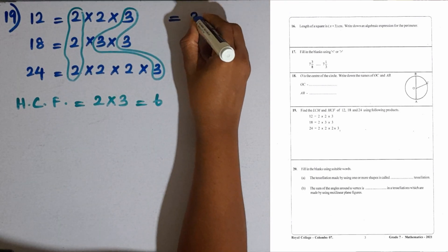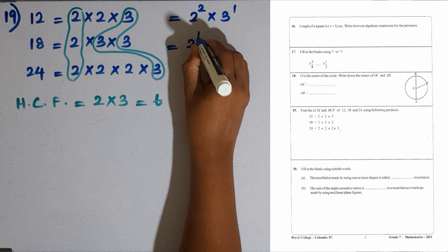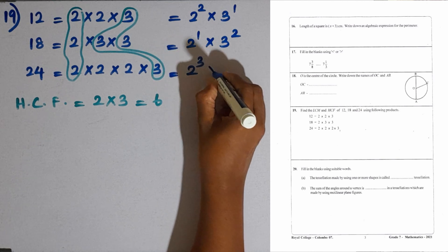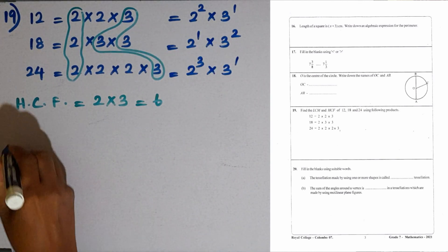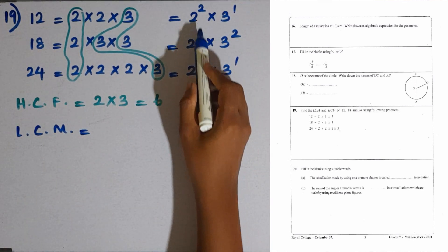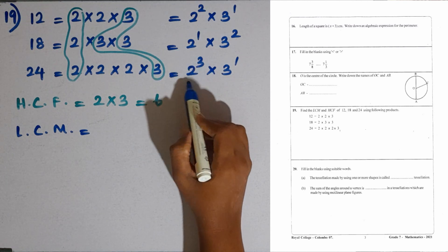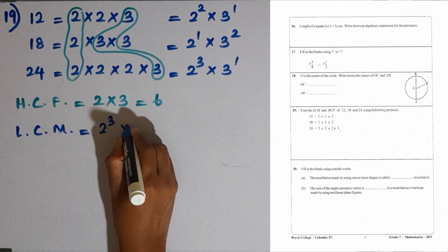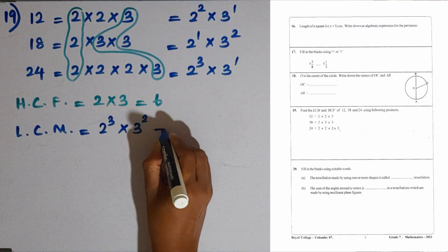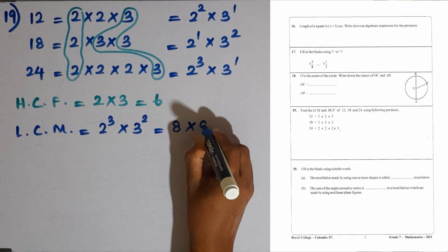Then how to take the least common multiple LCM. This can be written as 2 to the power 3 into 3 to the power 1, then 2 to the power 1 into 3 to the power 2, then 2 to the power 3 into 3 to the power 1. To take the LCM, we have to take the highest powers here. If you take the prime factor 2, the highest power is 2 to the power 3. Then 3, highest power is 3 to the power 2. Then we have to take the product of these 2 powers, which is 8 and 9. So, LCM is equal to 72.